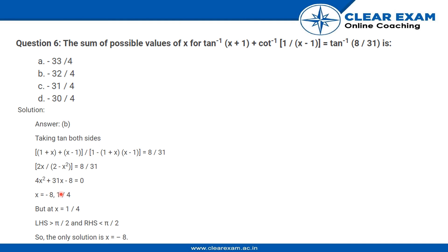And we know that tan inverse of 8 upon 31, this will be obviously something which is less than π by 2. So therefore, the only solution that is possible over here is x is equal to minus 8.